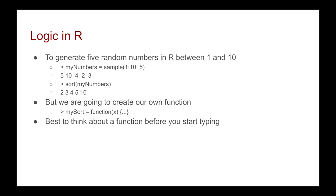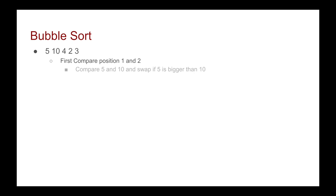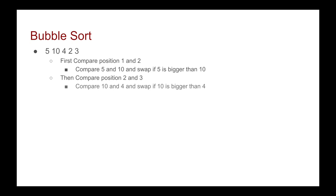One of the ways that we can sort is to use an algorithm known as the bubble sort. How the bubble sort works is you first compare positions 1 and 2. We compare 5 and 10, and we will swap if 5 is bigger than 10. In this case it's not, so we don't do anything. We then compare positions 2 and 3 — comparing 10 and 4, and we will swap if 10 is bigger than 4. And it is, so the new arrangement is 5, 4, 10, 2, and 3. We've swapped positions 2 and 3.